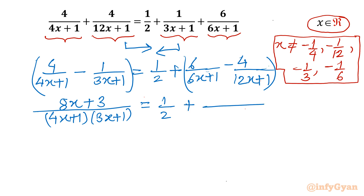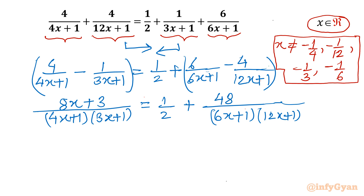Now for the RHS, the denominator in product form is (6x+1)(12x+1). After simplification, the numerator comes out to 48x+2.